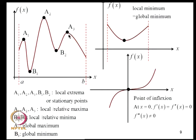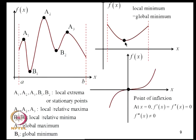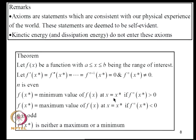We can see a few schematics of a function F versus X with local extrema or stationary points where F' = 0. Points A1, A2, A3 are local maxima; B1 and B2 are local minima. In the range from A to B, A2 is the global maximum and B1 is the global minimum. At a point where F' = 0, F'' = 0, but F''' ≠ 0, this is a point of inflection.